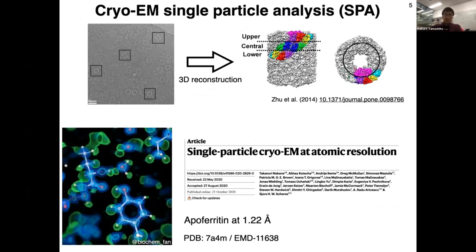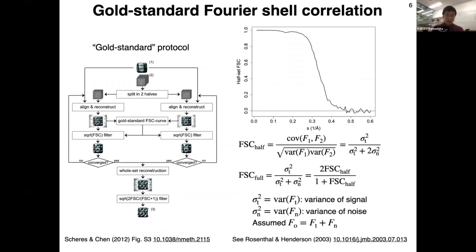I'd like to move on to single particle analysis. You may be familiar with this method - reconstructing 3D density maps from 2D projection images of particles randomly oriented in thin ice layers. Historically, it was for low resolution analysis, but in 2020 atomic resolution was finally achieved where even hydrogen and water molecules were visualized. Now atomic model refinement for cryo-EM single particle analysis is more important.